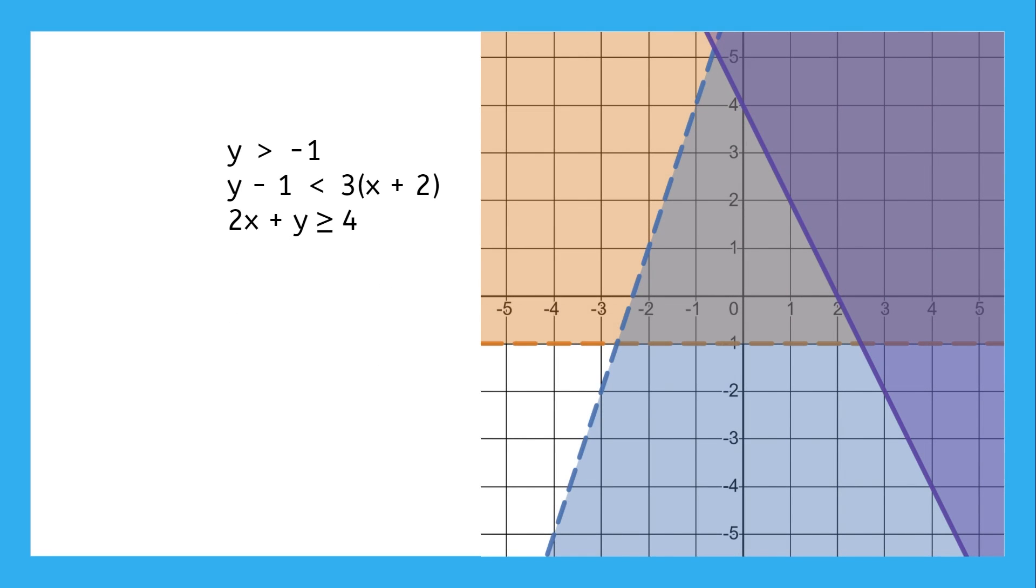The more inequalities are in the system, the more lines and shaded regions there are, and that makes it hard to tell which area is the one with all the solutions. The easiest way to figure it out is to just check a point in every area until you figure out where all the areas overlap.